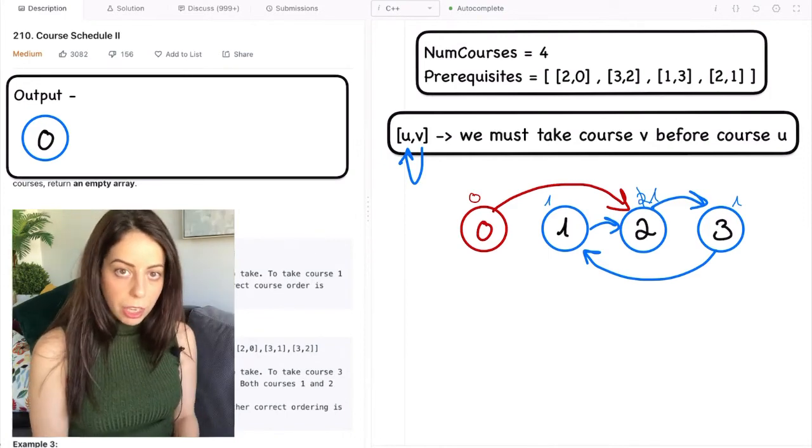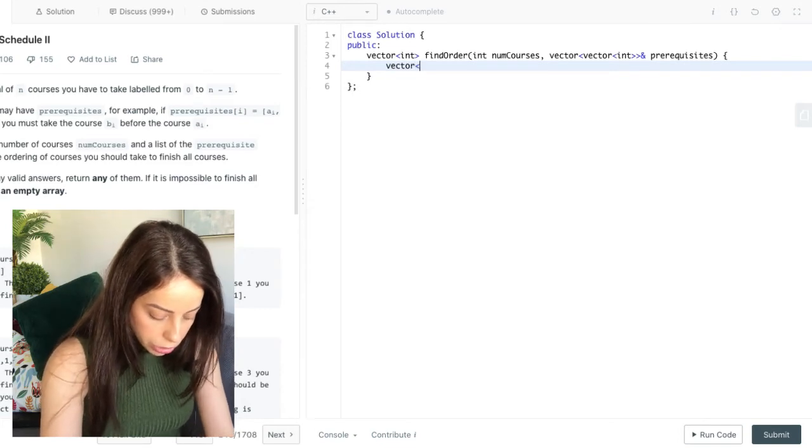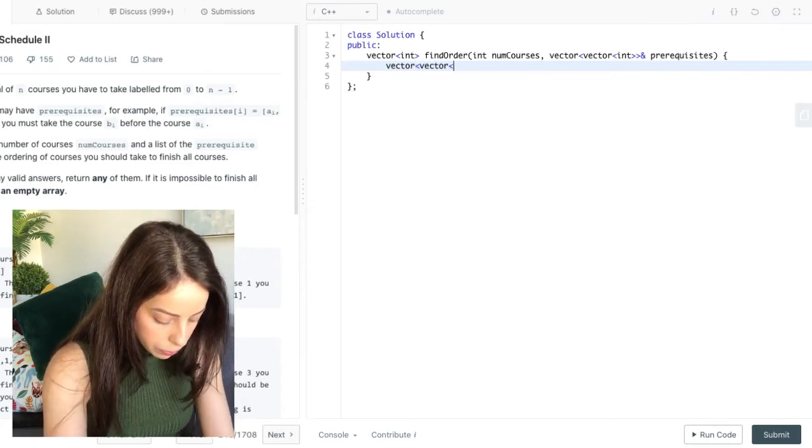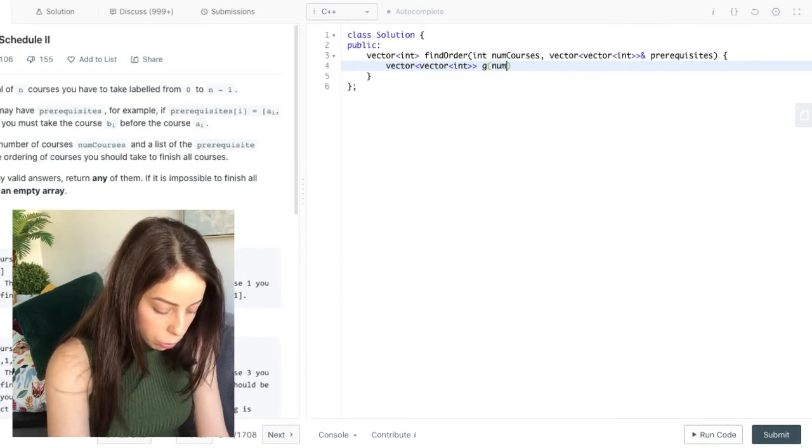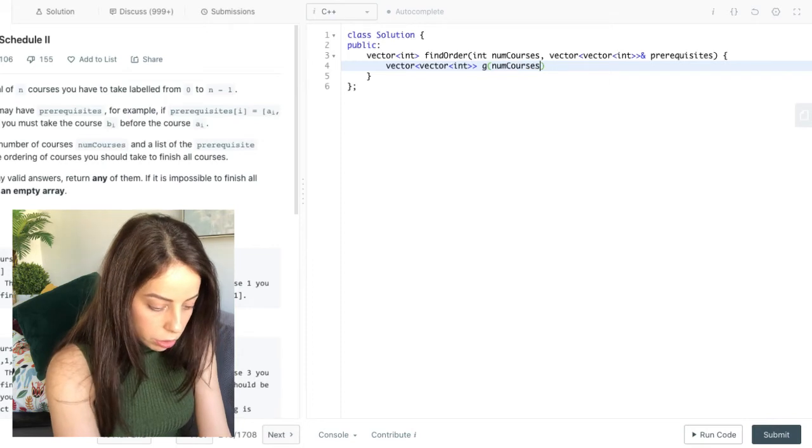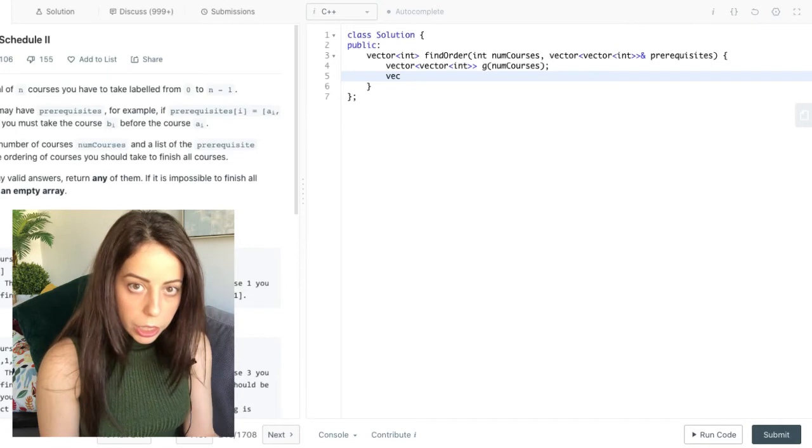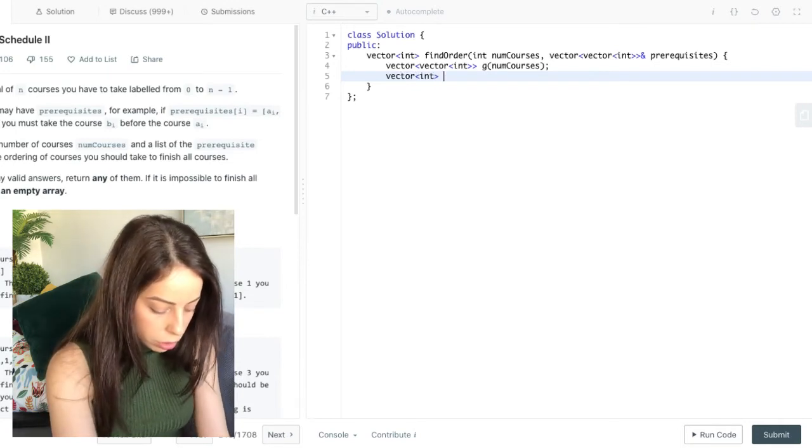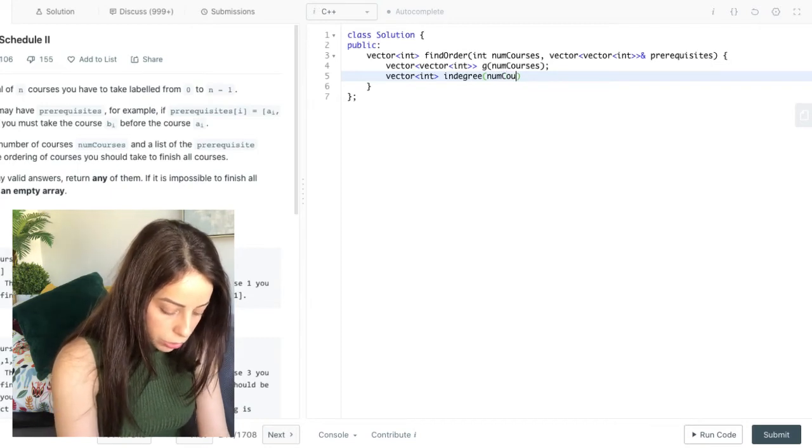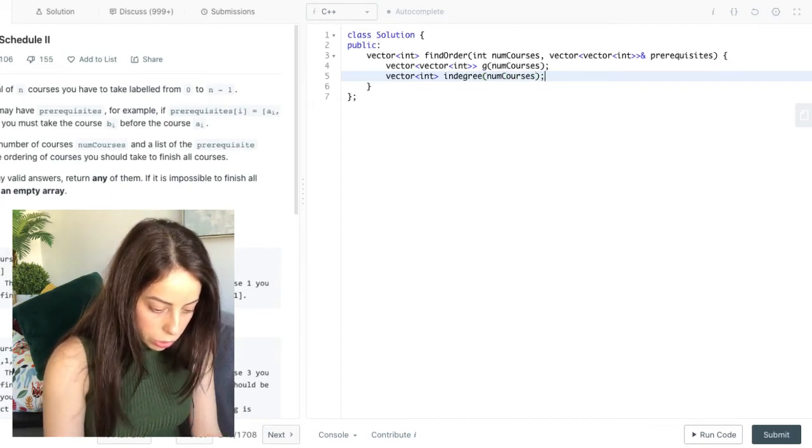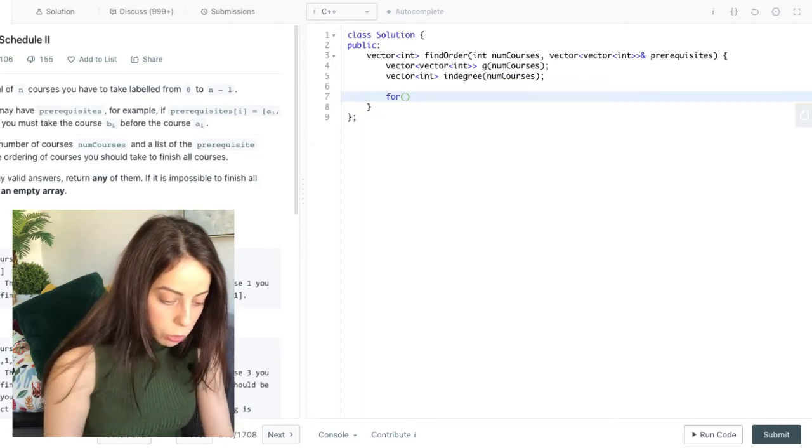Okay, so I think we're ready to code this out. So let's go. Now we start with defining the graph. It's just going to be a vector of vectors. I'm going to call it g and the number of its nodes is numcourses. And we're also going to need an array for the in degrees. Each node is going to have an in degree. So it means that the size of this array is also numcourses.